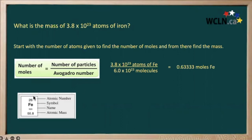Okay, looking at the periodic table, we can see iron's atomic mass is 55.8 grams per mole.